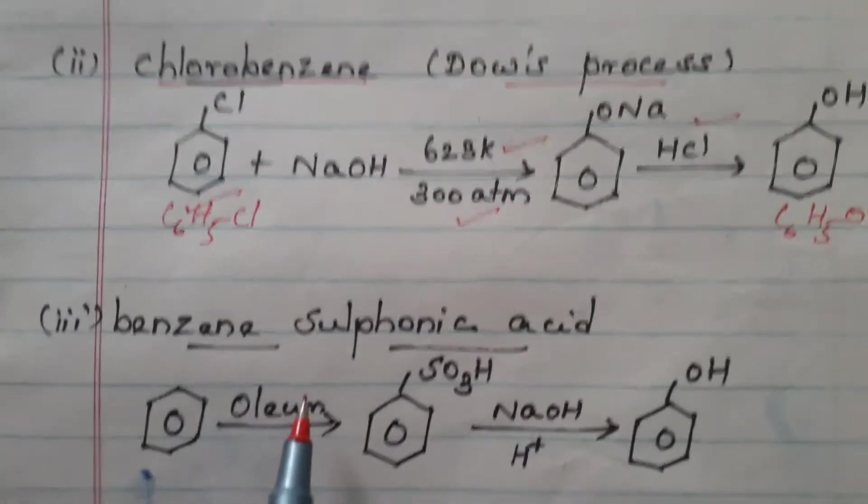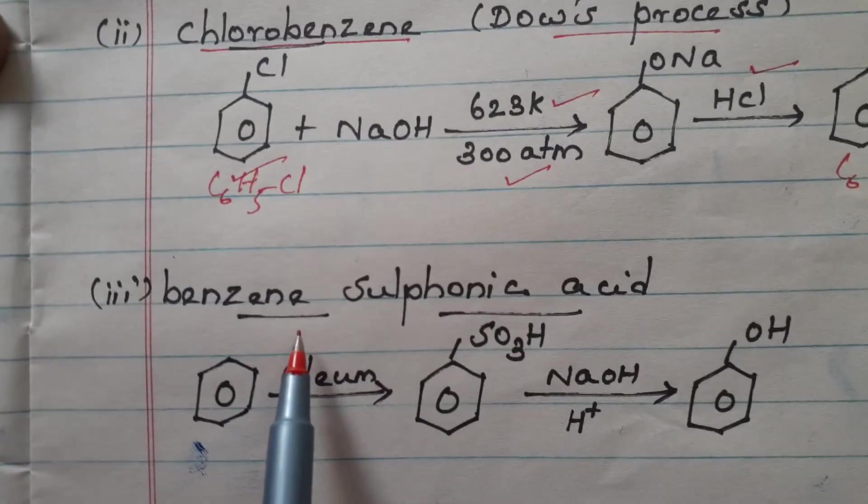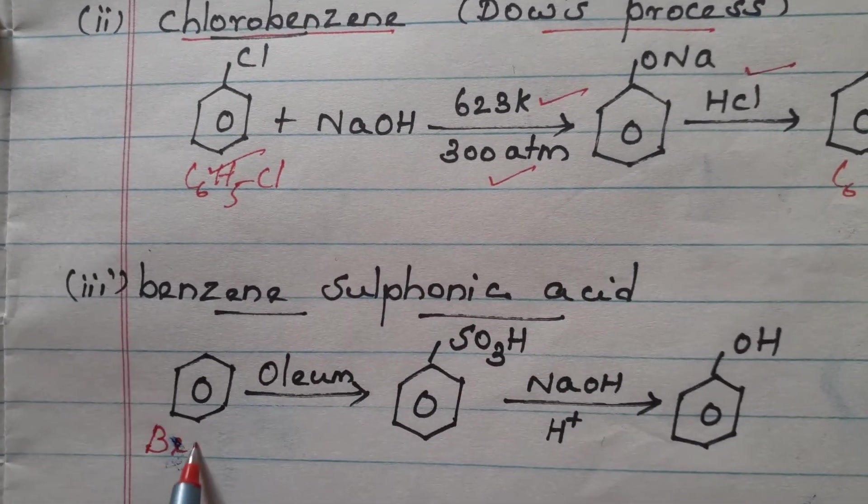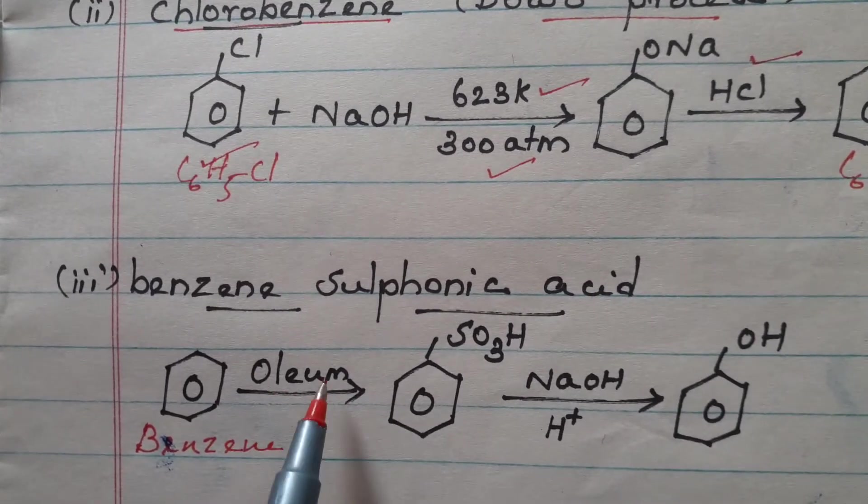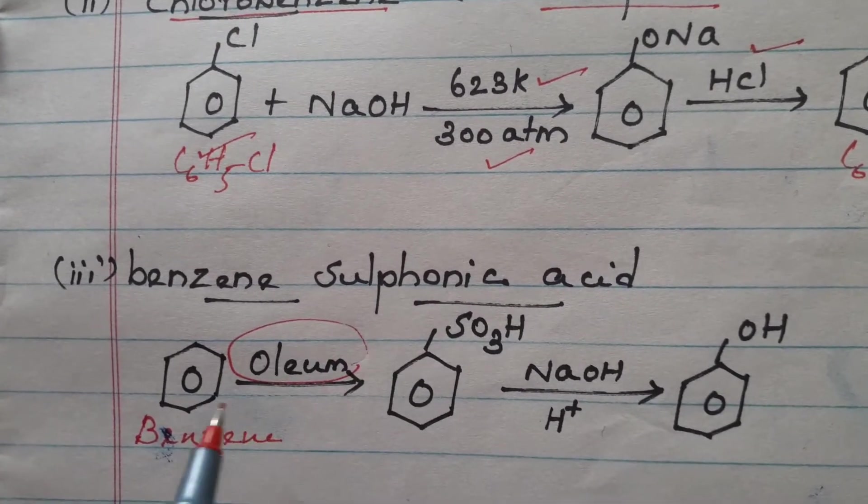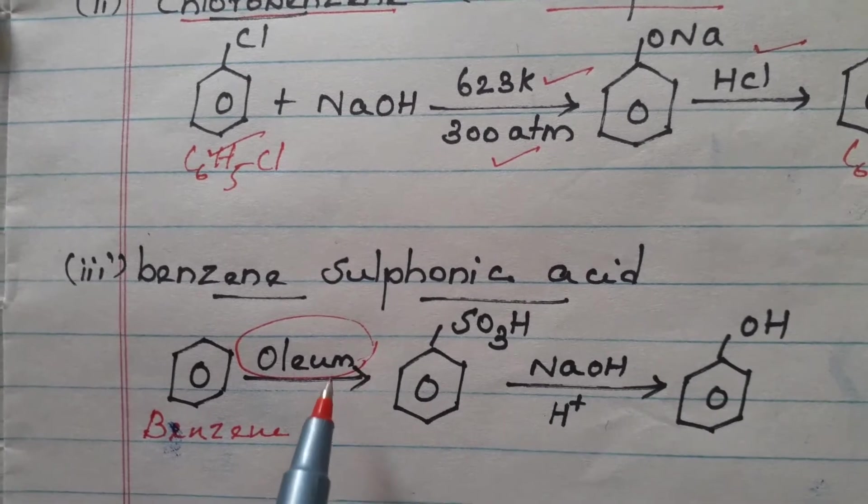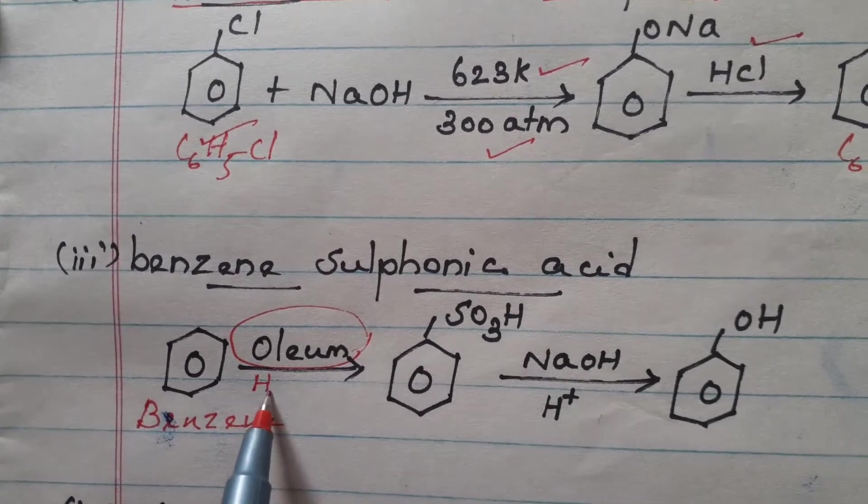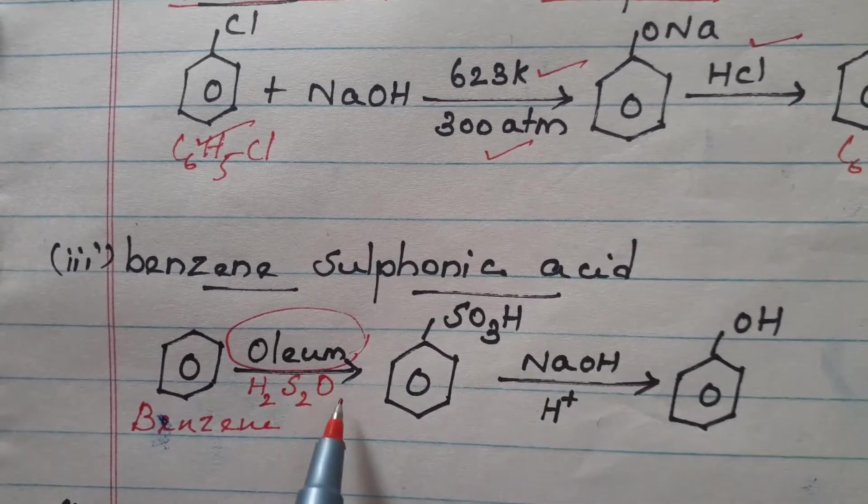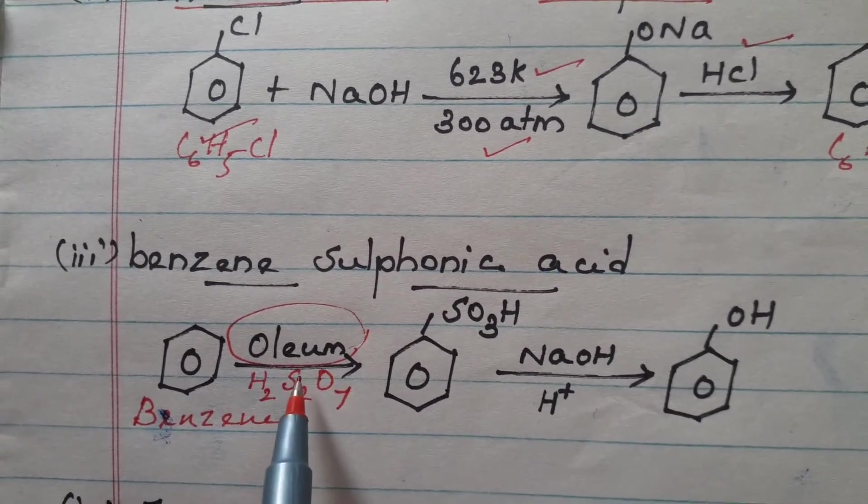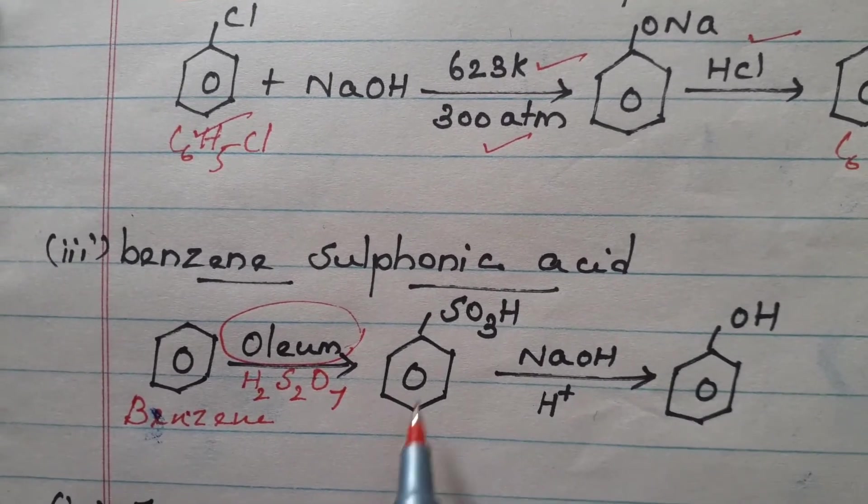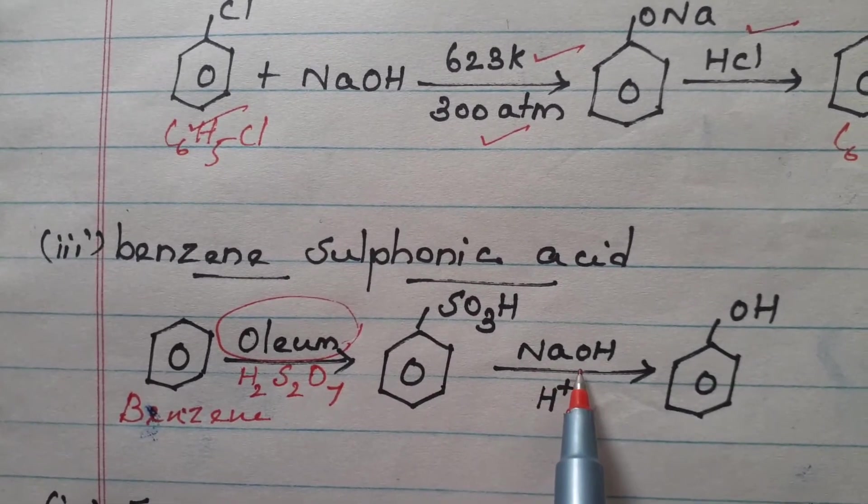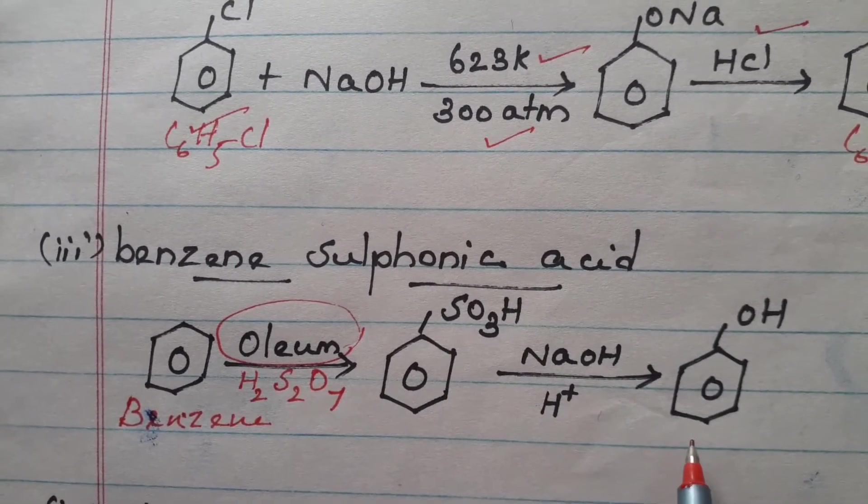Now let us see the third reaction, preparation of phenol from benzene sulfonic acid. When benzene C6H6 is treated with oleum, you all know the formula for oleum from your 10th standard. The formula for oleum is H2SO7. When oleum is treated with benzene, it produces an intermediate product. This, on treatment with sodium hydroxide and H plus, will produce phenol.